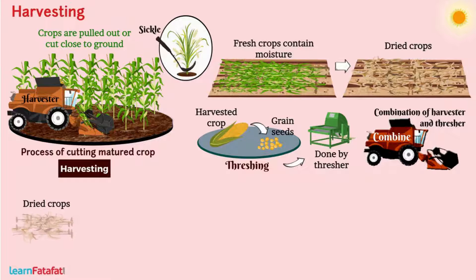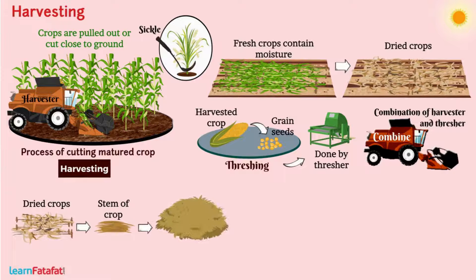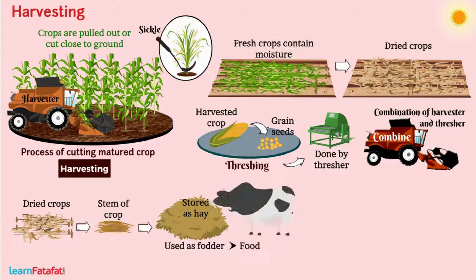After separation, the stem of the crop is cut into small pieces and stored as hay. It is used as fodder, i.e., food for cattle.